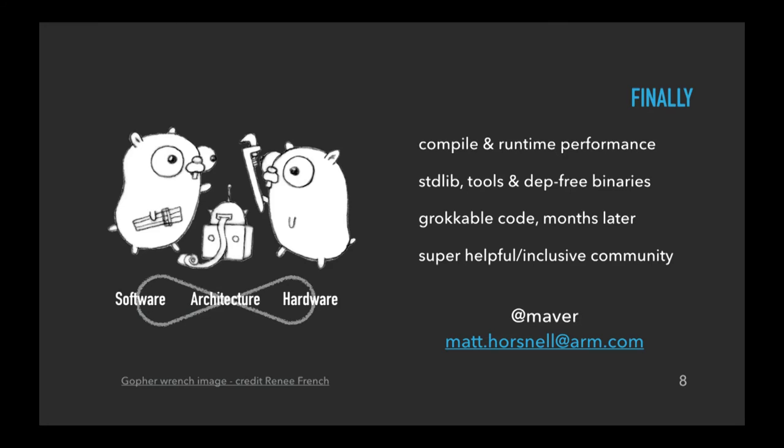To summarize, there are a lot of things that I really like about Go: great runtime and compile performance, a fully-featured standard library, great tools, and dependency-free deployment — I can't rate that enough. And obviously the wider community is fantastic to work within. I'll leave you with the message that software and the architecture are continuously evolving, and it's important for people like me to work with people like you to understand how we can build a better future. Thank you.